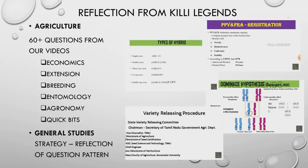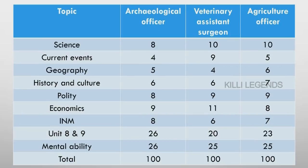In this video, we are going to take a look at the economics questions. Now, the general paper is going to take a look at the strategy video. The strategy video is a reflection. In the general paper, our predictions are reflected. In the strategy video — agricultural officer and veterinary assistant surgeon — we will see the number of questions in each chapter.